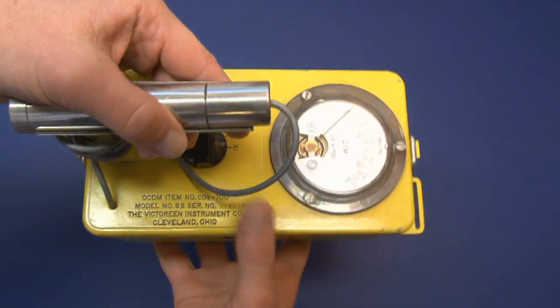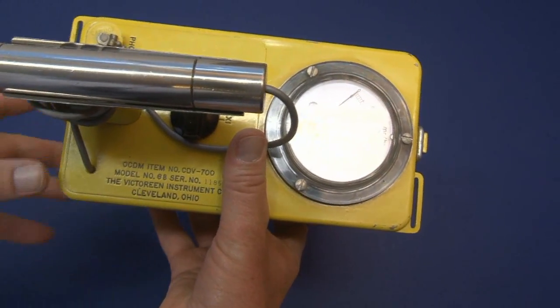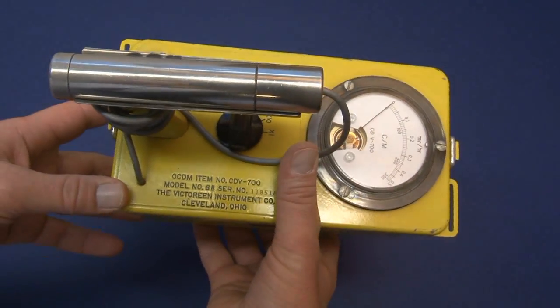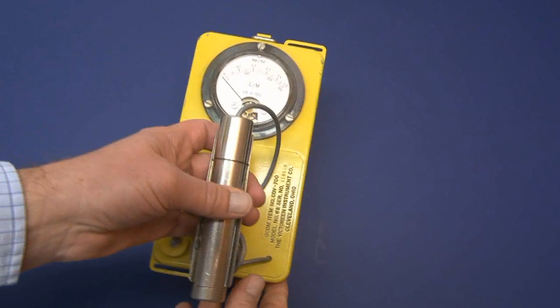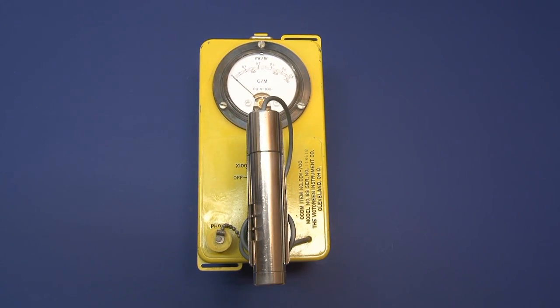This instrument here is a model 6B made by the Victorine Instrument Company, and these were widely made in the late 50s and 60s. This model here was made in 1962, so there are a lot of these that are still in use today.